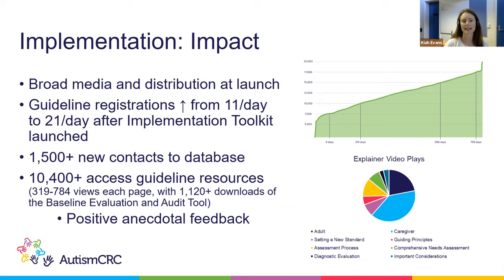There have been over 10,000 accesses to the guideline resources since the launch, with each different page receiving around 300 to 800 views and well over a thousand downloads of the baseline evaluation and audit tool. The most popular resources have been around caregivers, followed by autistic adult resources, then the assessment process, with relatively good interest across all resources. Anecdotal feedback from people who accessed the resources has also been very positive.